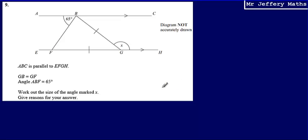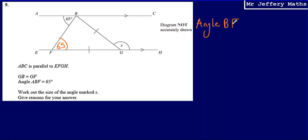The first thing I'm going to do is recognize that I've got parallel lines. Because of the parallel lines, that angle is going to be exactly the same as that angle. So angle BFG is equal to 65. The reason for that is that alternate angles are equal.